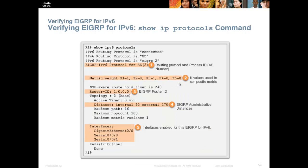Same K values are used in IPv6. We use K1 bandwidth and K3 delay, so it's bandwidth times delay. The bread and butter command show IPv6 protocols again shows you your autonomous system number, which has to match, your K values, the router ID, and your administrative distance.